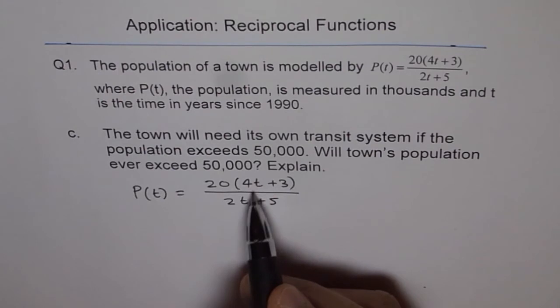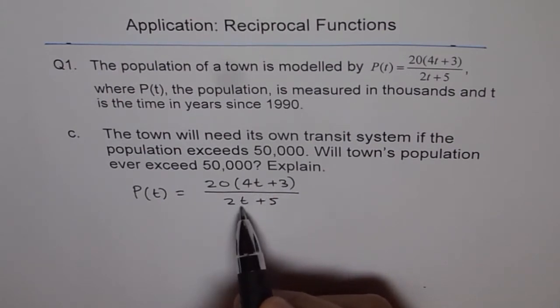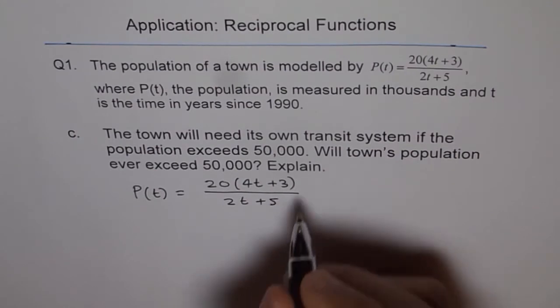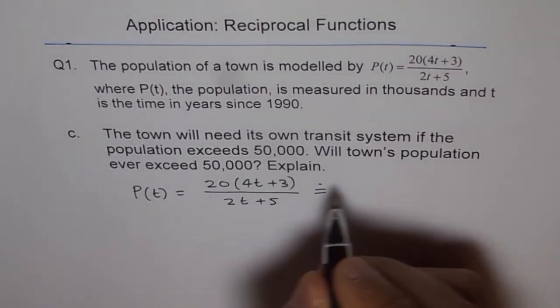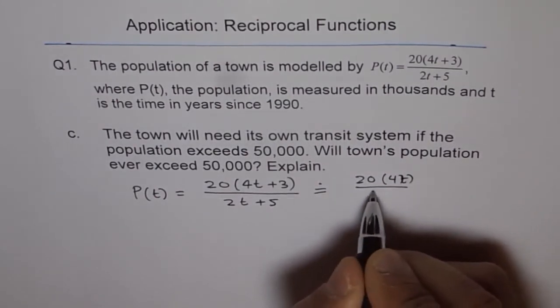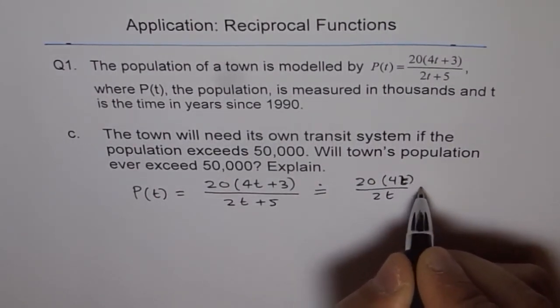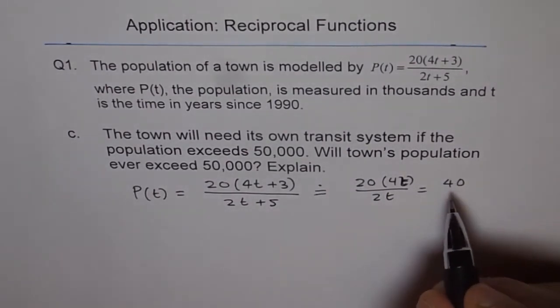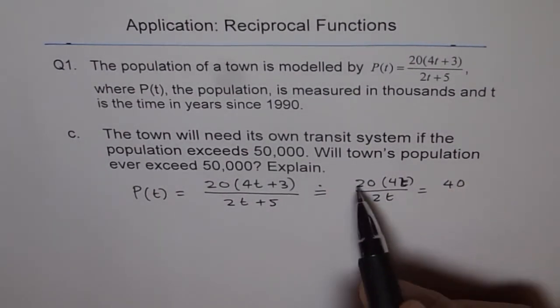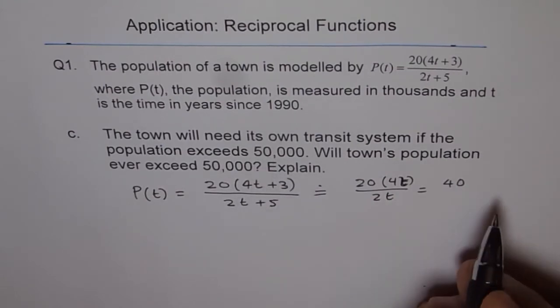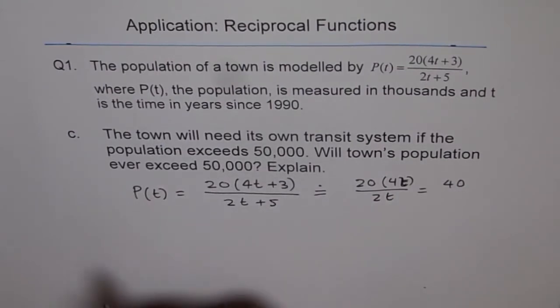If t is very large, then these numbers are negligible. So this approximates to 20 times 4t divided by 2t, and that gives us 40. So if t is very large, then we see the population can go maximum to 40,000, not 50,000, right? So 40 means 40,000 for us. This is one way of answering this.